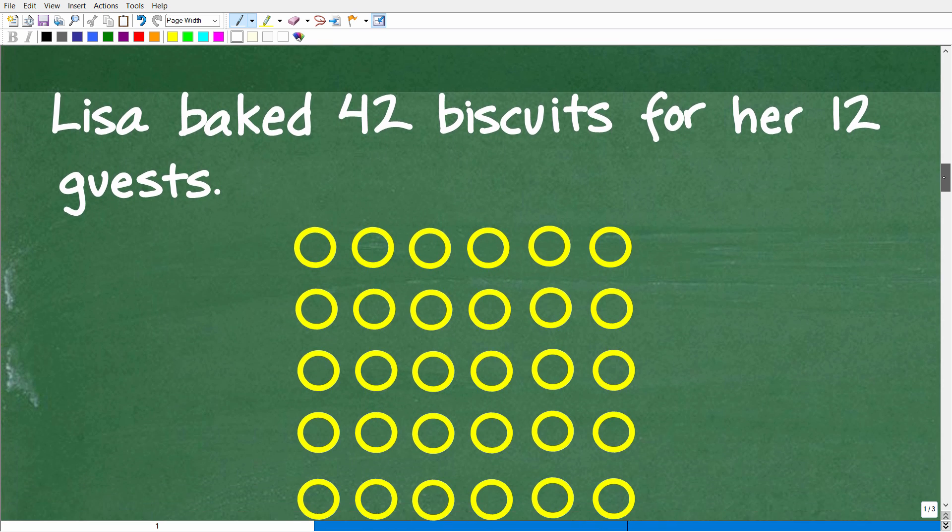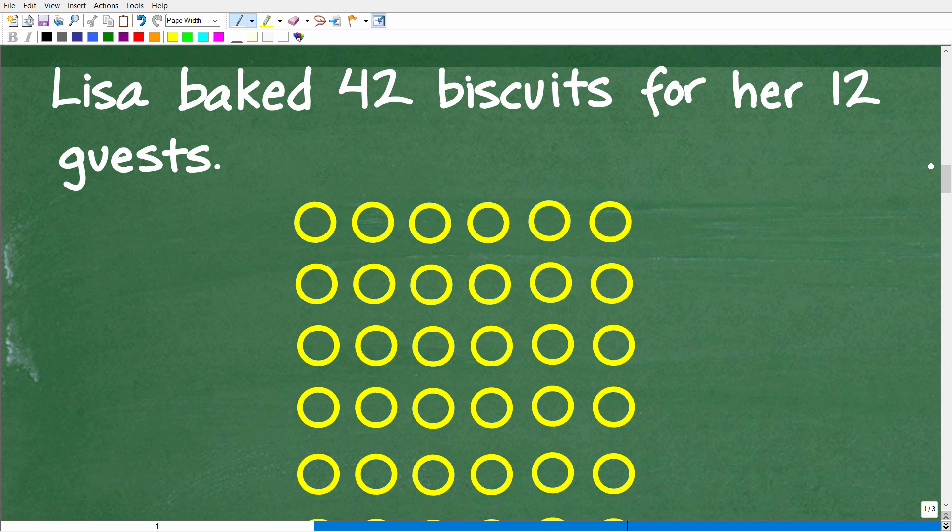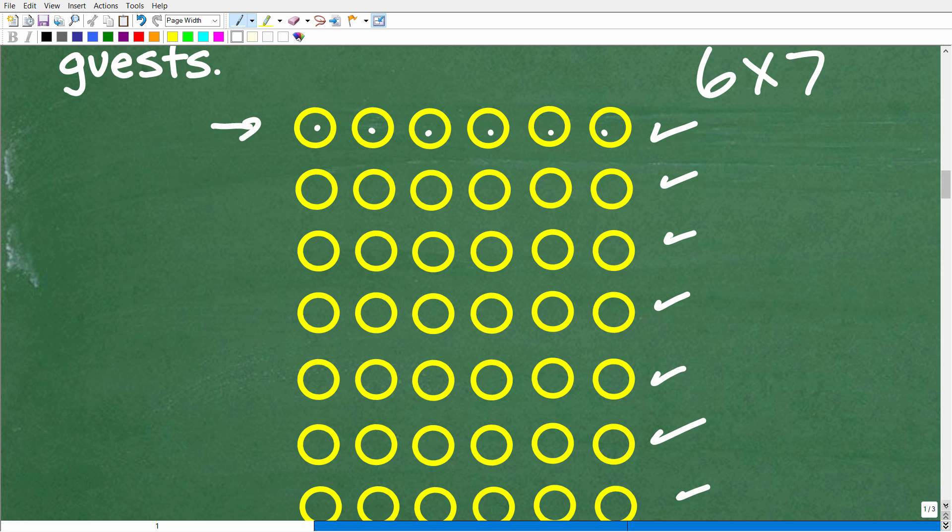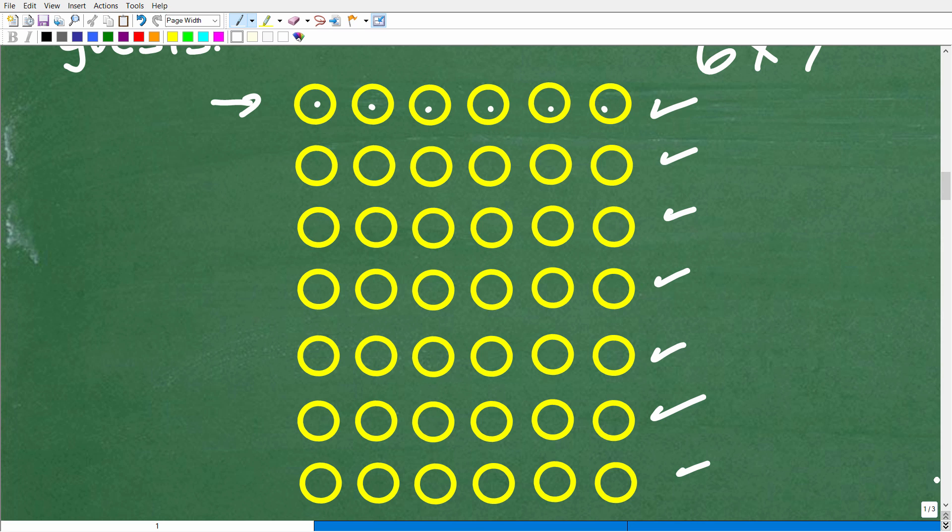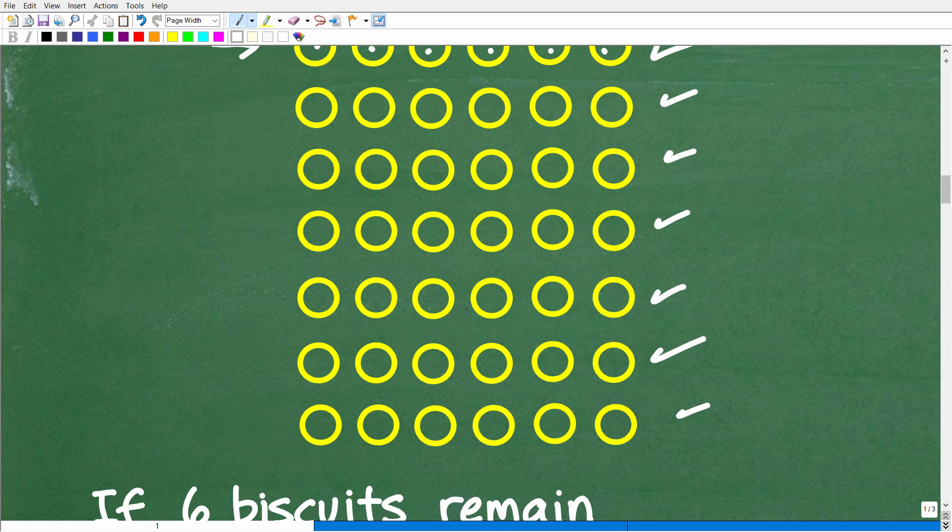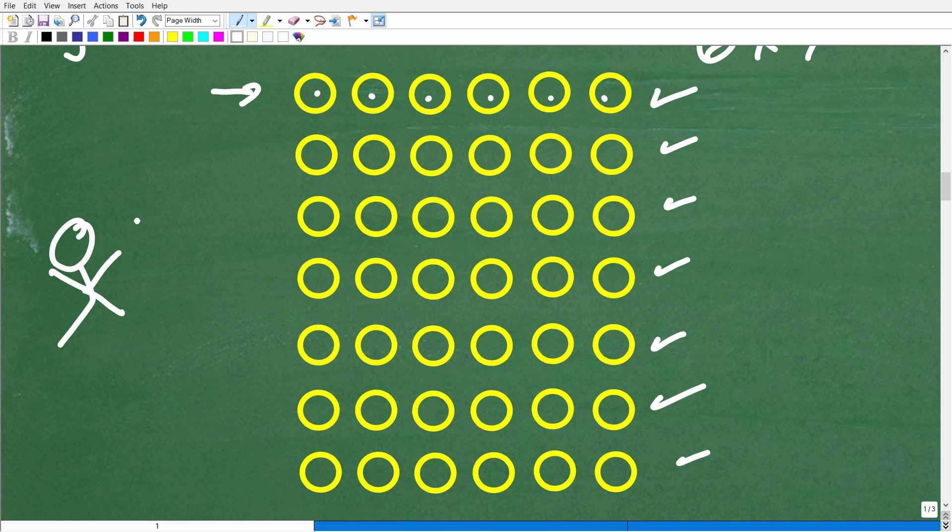All right, so let's think about how many biscuits that Lisa baked for her 12 guests. She's such a good cook. Hopefully these biscuits are really nice. But I drew out some biscuits here. Now you don't have to do this, this is just me having fun with this problem. So we have one, two, three, four, five, six in this row of biscuits. So six times seven is 42, so we're going to have seven rows right here. We have one, two, three, four, five, six, and then of course here is our seventh row. Now if you felt compelled to write out all these biscuits, well that's fine, but it's not necessary. I just did this just to have fun. But here is our 42 biscuits for our 12 guests.